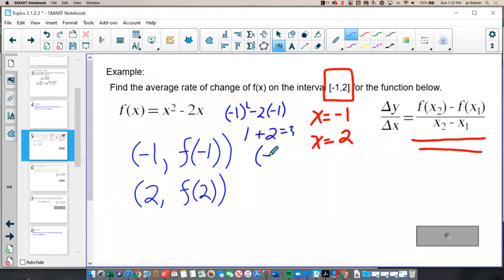So my point is negative 1 comma 3. At 2, I get 2 squared minus 2 times 2, which is 0. So here the point is 2 comma 0.